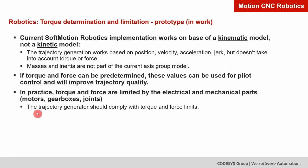For the robotics outlook, we are currently developing a prototype for torque determination and limitation. Currently, Soft Motion implements a kinematic model of the robot, not a kinetic or dynamic model. That means trajectory generation works based on position, velocity, acceleration, and jerk, but does not account for torque or force — masses and inertia are not part of our current axis group model or trajectory generation. If we add this support, we can predetermine torque and force values on the motors, enabling pilot control and improving trajectory quality.